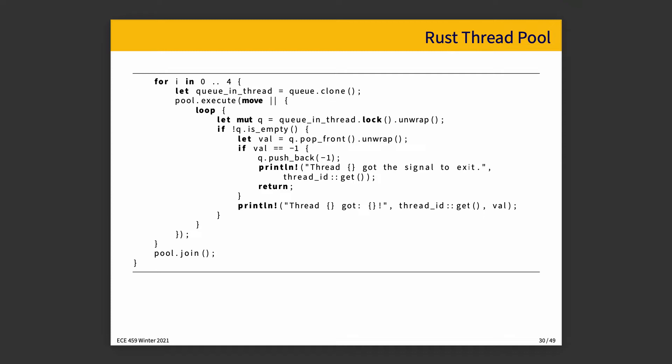We pop the front value from the queue. If it's negative one — the poison pill — we know we're not the only worker consuming items, so we throw it back in the queue so the next worker also gets the signal to exit. Otherwise, we print what value we got. After we have created all the tasks to execute, we call join.